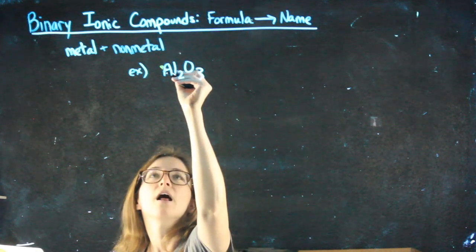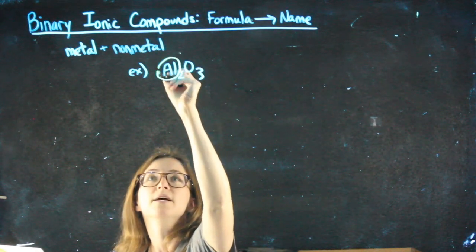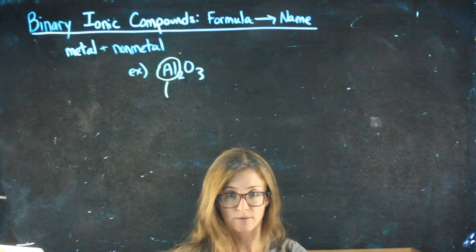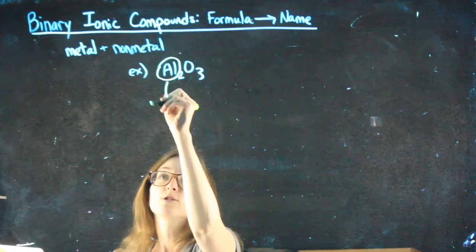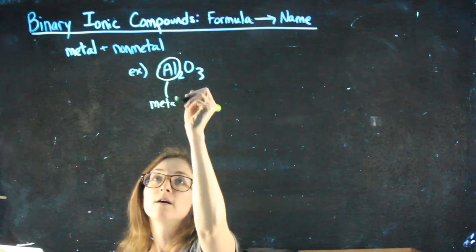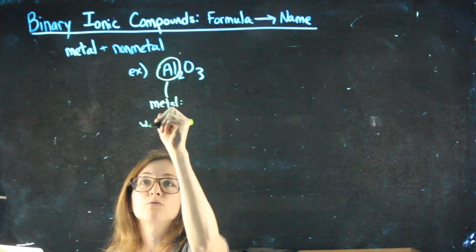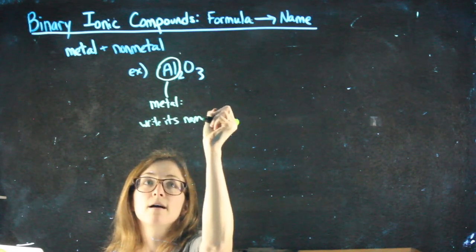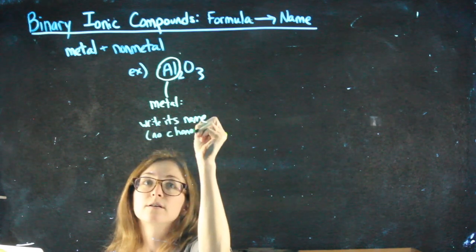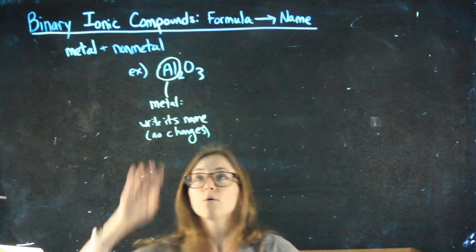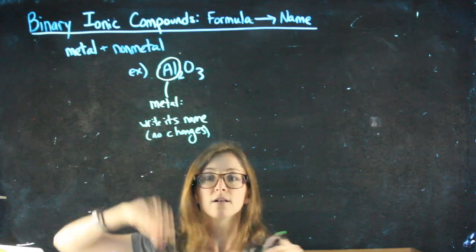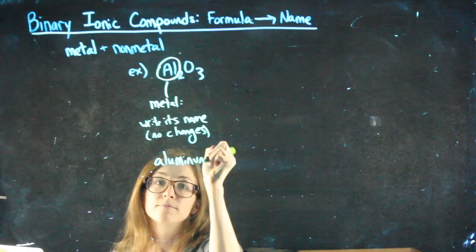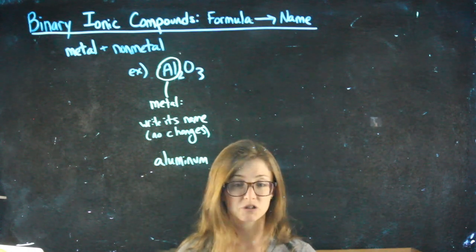I'm always going to start by taking the first element and just writing its name exactly as it appears on the periodic table. The first element is always going to be our metal. And so for the metal, we just write its name. No changes. So I find AL on the periodic table. I see that it's called aluminum. I would write aluminum. Always, never do anything else to it.